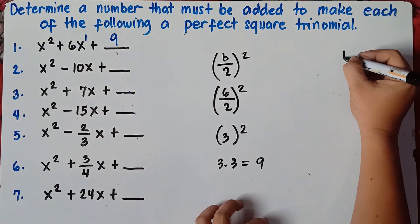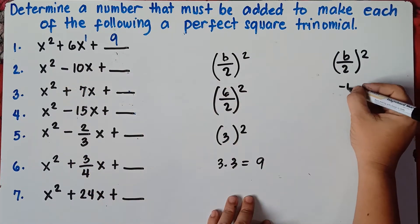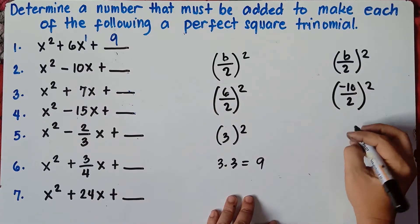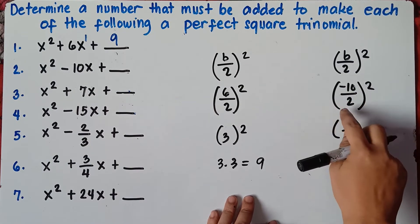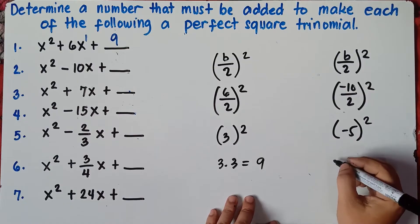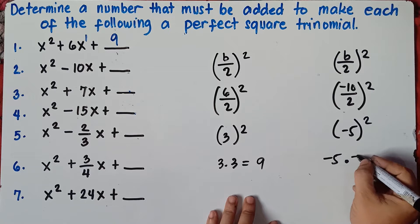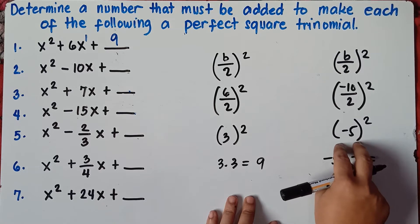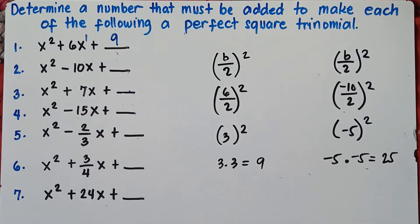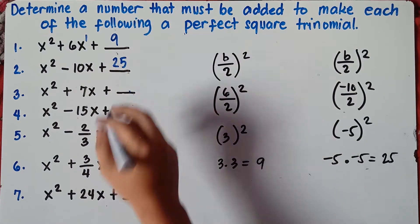Let's try number 2. b divided by 2, quantity squared. Our b is beside x, that's negative 10. Negative 10 divided by 2 is negative 5 — negative divided by positive is negative. So negative 5, then squared. Negative 5 squared means negative 5 times negative 5, which is positive 25. Therefore, the number is positive 25.